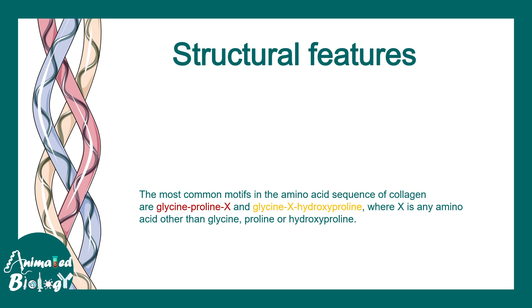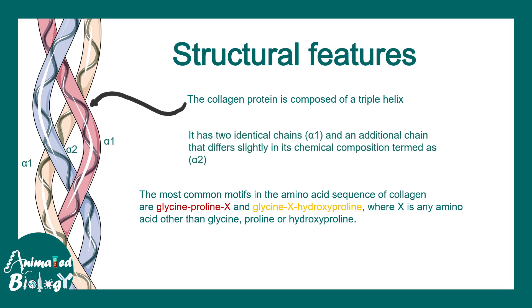The most common motif present in collagen is glycine-proline-X or glycine-X-hydroxyproline. Collagen has a triple helix structure which has two identical alpha-1 chains and another chain known as the alpha-2 chain, which differs a little bit in terms of chemical composition.